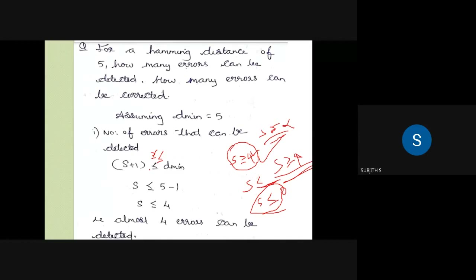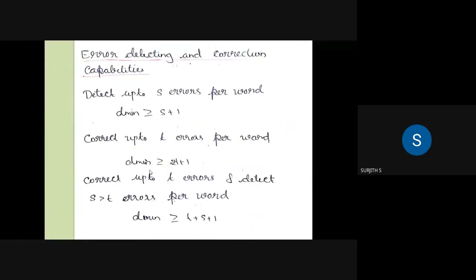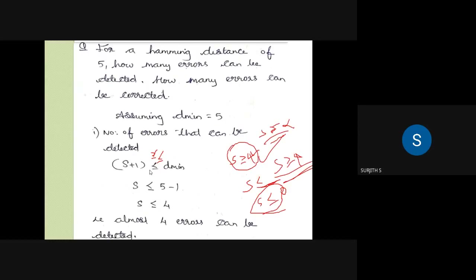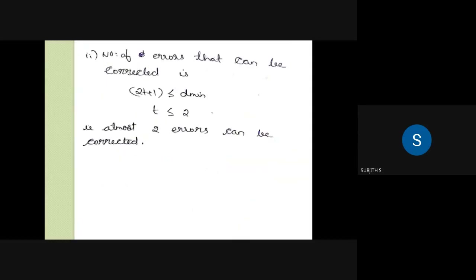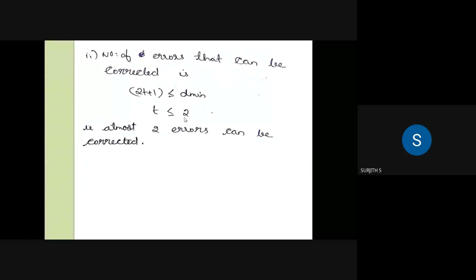If you have D minimum greater than or equal to s plus 1, that's correct for detection. D minimum is greater than or equal to 2t plus 1 for correction. If you have less than or equal to T plus 1, you will also be able to correct errors.